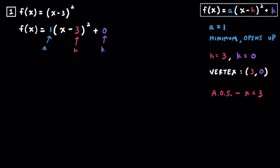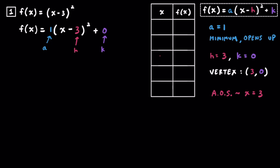What's nice about vertex form is because we already know the vertex from looking at the equation, we can go ahead and make a table and write our vertex in the center. Because parabolas are symmetrical, we put the vertex in the middle: x equals 3 and f of x equals 0. Now we'll pick numbers equidistant on both sides of 3. Below 3 I'll choose 1 and 0, and matching those on the other side gives us 5 and 6. I like using 0 and 1 because they're easier to plug in. I'll use 5 to stay in the positives when subtracting 3.